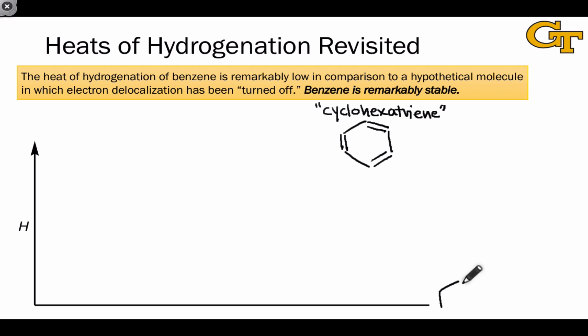Let's think about cyclohexane as being the zero line on this enthalpy graph, so that hydrogenation gets us down to the enthalpy of cyclohexane.